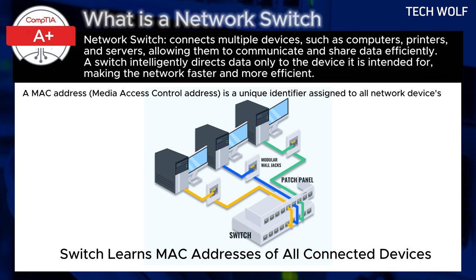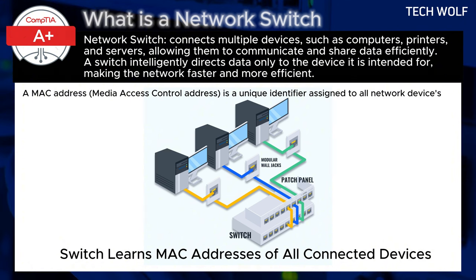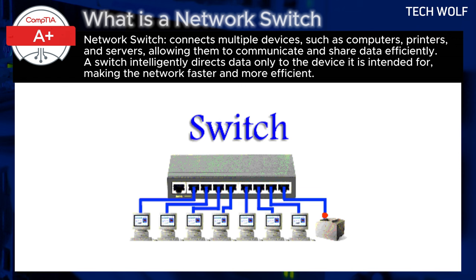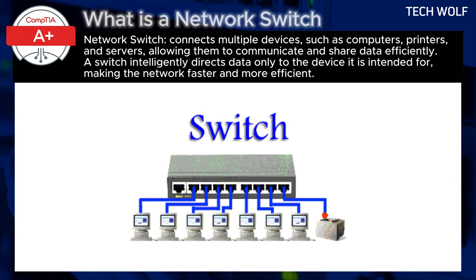If desktop 1 wants to communicate with desktop 2, the switch knows to forward the data only between these two desktops, rather than flooding the network and sending data to all connected devices. Additionally, if a new device like a network printer is added, the administrator simply connects the printer to an available port on the switch. The switch will recognize the new device and integrate it into the network without requiring complex configurations.